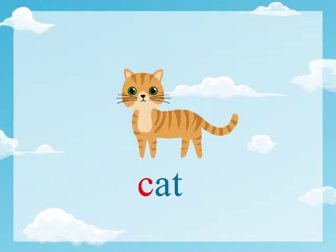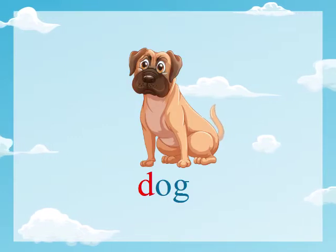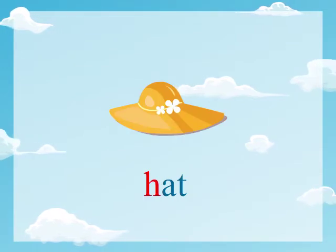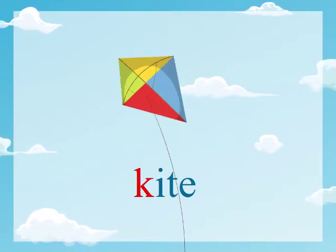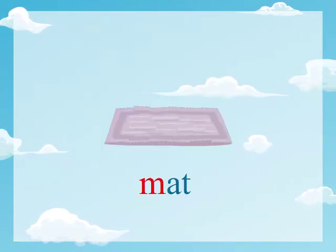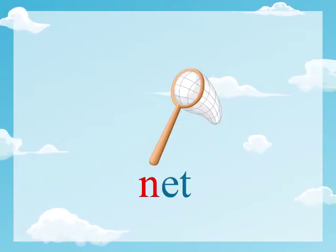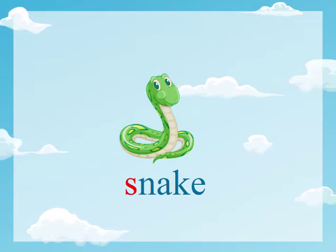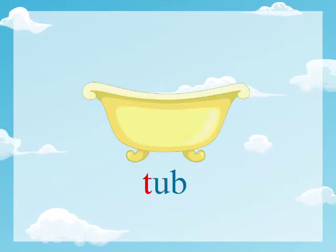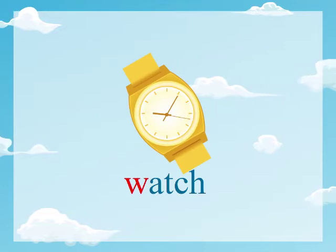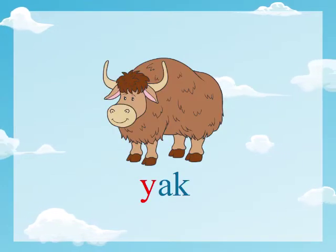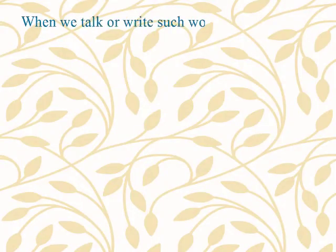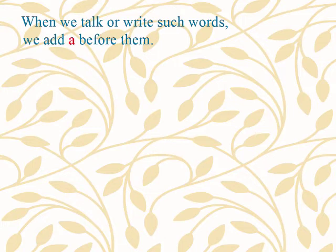Boy, Cat, Dog, Fan, Grape, Hat, Jacket, Kite, Lamp, Mat, Net, Pot, Quilt, Rat, Snake, Tub, Violin, Watch, Xylophone, Yak, Zip. When we talk or write such words, we add 'a' before them.